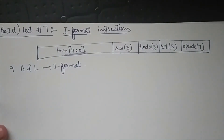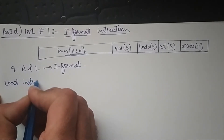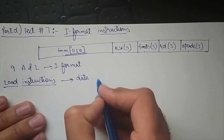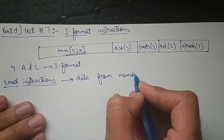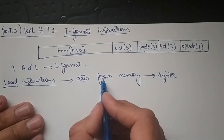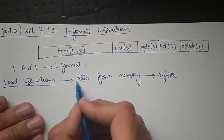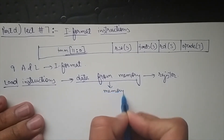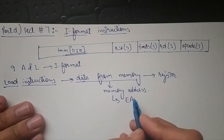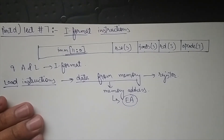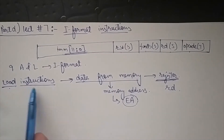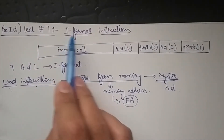In today's lecture, we will be discussing load instructions. Load instructions are those instructions which load data from memory and place this data in a register. To load data from memory, we need the memory address, or we can say the effective memory address EA. After finding the effective memory address, we go to memory, get the data, and place it in a destination register. Load instructions follow the same I-format, with one destination register, one source register, and an immediate offset.